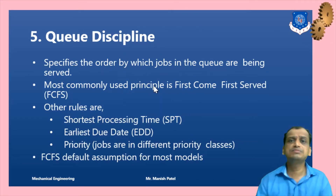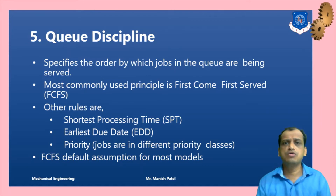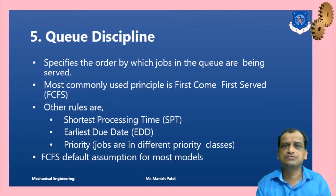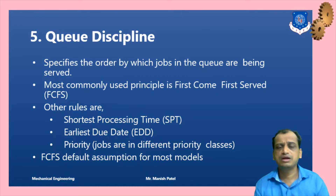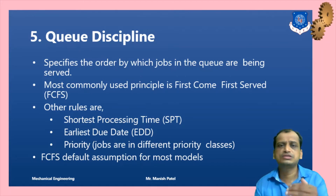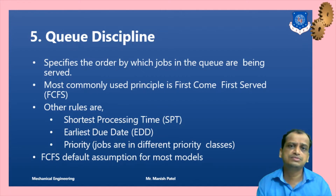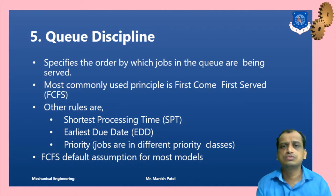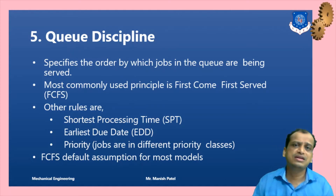For queue discipline, we have first come first serve, SIRO which is service in random order, last come first serve, and priority basis. Service discipline also has certain rules: SPT — shortest processing time — earliest due date, and priority jobs. Based on these criteria we decide the discipline.